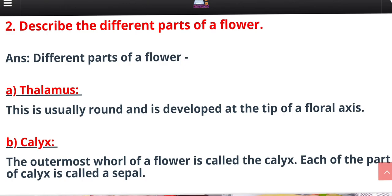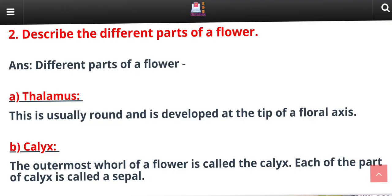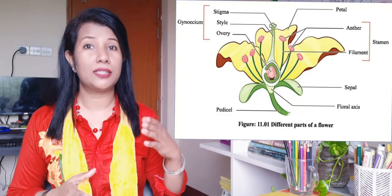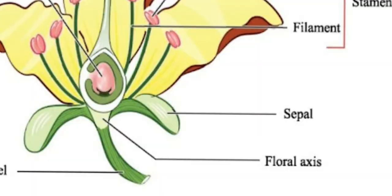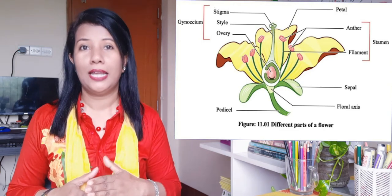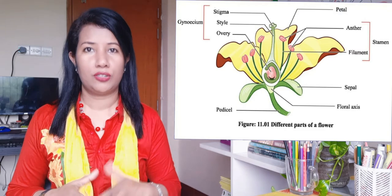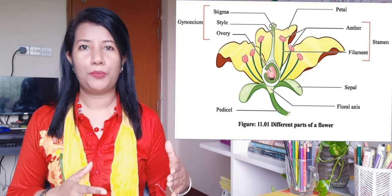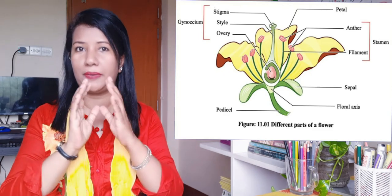The outermost whorl of a flower is called the calyx. Each part of the calyx is called a sepal — you must remember that. If the sepals of the calyx are not separated, that is called gamosepalous. If they are separated, that is called polysepalous. Some are attached together and some are not — that is the difference.